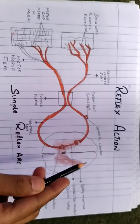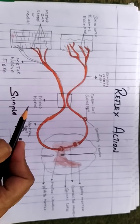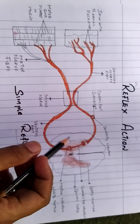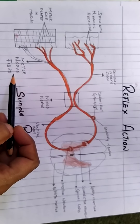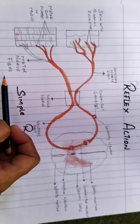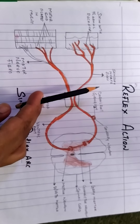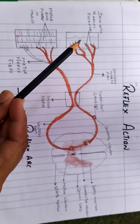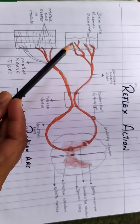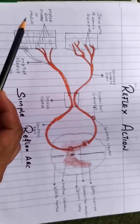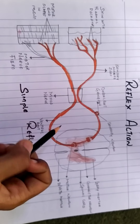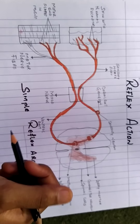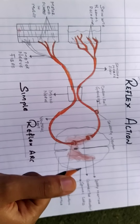This is a simple reflex action diagram. As you can see, there are a few labeled parts: these are the motor nerve fibers, these are the sensory nerve fibers, this is the skin with the thermal receptor, and motor end plates in the muscles. Let us see what components are present in the reflex arc.